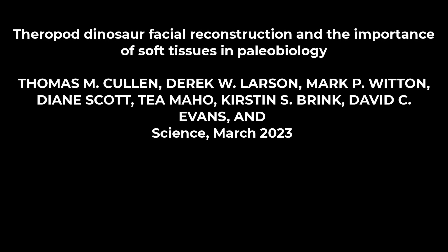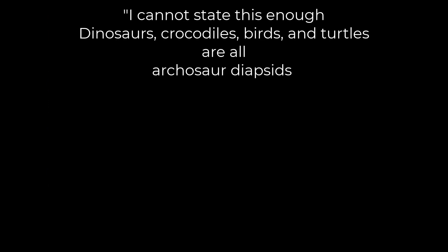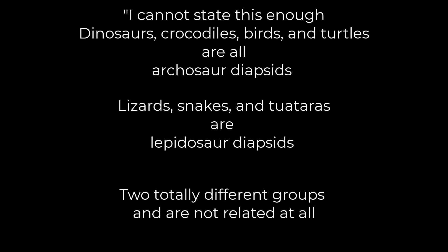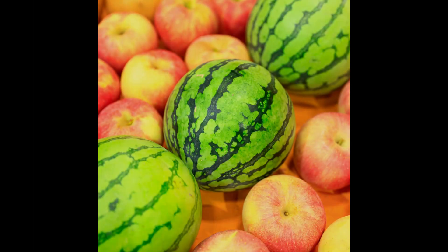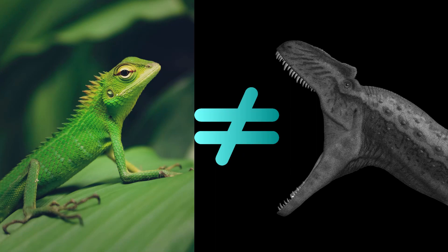A recent paper by Cullen, Larson, Witten, Scott, Mayhew, Brink, Evans, and Reese, published March 2023, used monitor lizards as a model for theropods having lips — which ties into this point that I cannot state enough: dinosaurs, crocodiles, birds, and turtles are all archosaur diapsids, and lizards, snakes, and tuataras are lepidosaur diapsids — two totally different groups that are not related at all. It's not like comparing apples and oranges; it's more like comparing apples and watermelons. To put lizard morphology onto dinosaurs is completely wrong. Dinosaurs are not lizards — and that goes not just for lips, but also for putting iguana scales on dinosaurs' backs. Dinosaurs are not lizards.